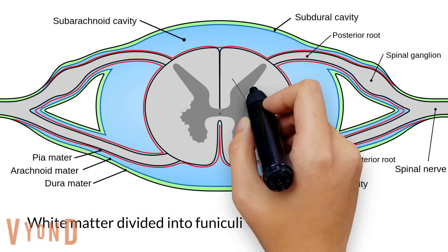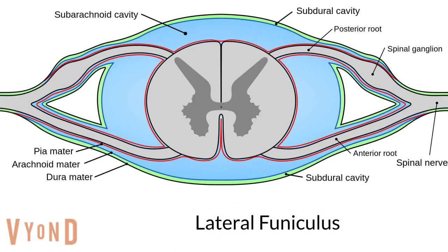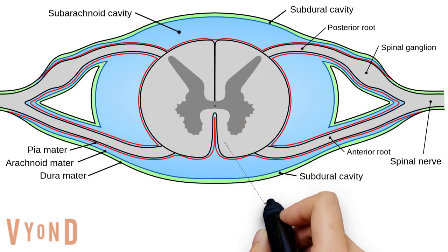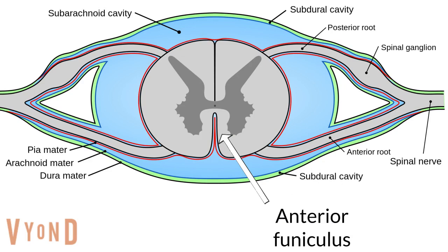The white matter is divided into areas called funiculi. Here is the posterior funiculus, the lateral funiculus, and the anterior funiculus.